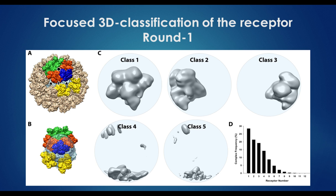The first thing we did with this analysis was focus classification. That means we masked an area, and we masked off an area corresponding to the TFR volume.